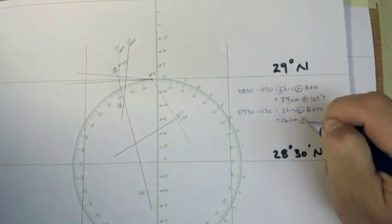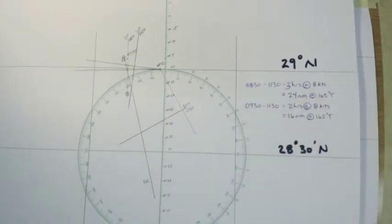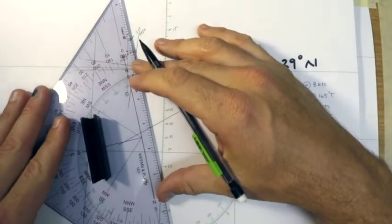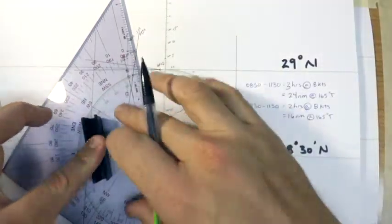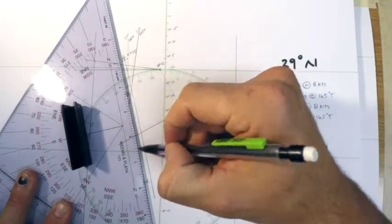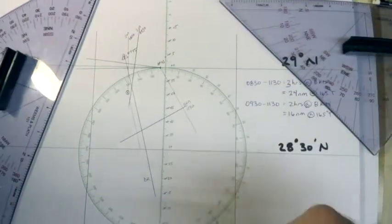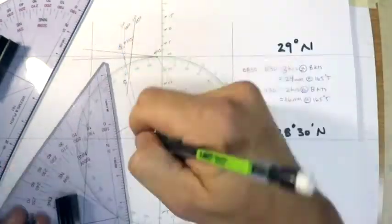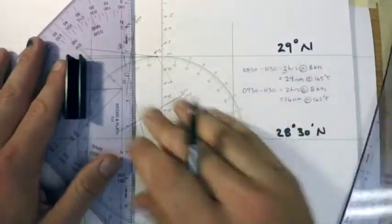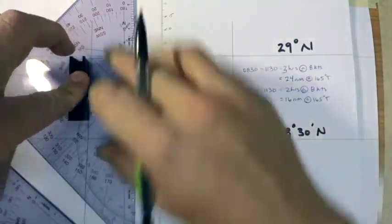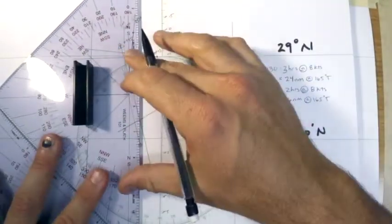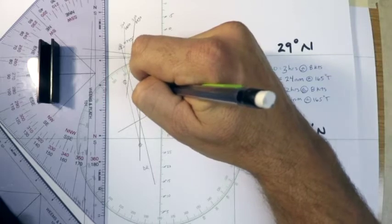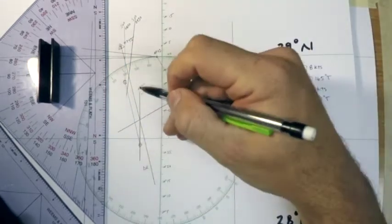I just need to advance those along that vector. Since I already plotted my 165 I don't need to monkey around with that too much. I'll go 24 nautical miles, and then I can just parallel down my original 830 DR to that new position. I'll label this one 0830 to 1130 sun, so I have my 1130 and my 0830 to 1130 running advanced sun line.